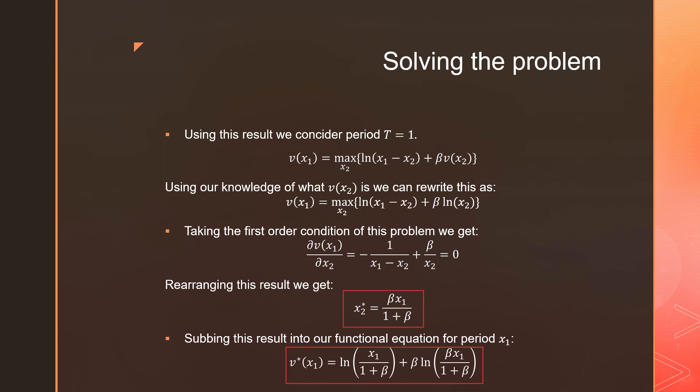Taking our first order conditions of this problem with respect to X_2, which is what we are dealing with, we can solve for our optimal cake size in period 2, or the optimal amount that should be saved for the next period as a function of X_1.